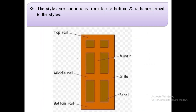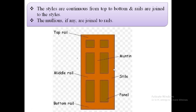In this image we can see this is the stile, this one is also a stile, and these are the rails — that is the top rail, the middle rail, and the bottom rail. These stiles are continuous from top to bottom and these rails are joined to the stiles. The mullions, if any, are joined to the rails.